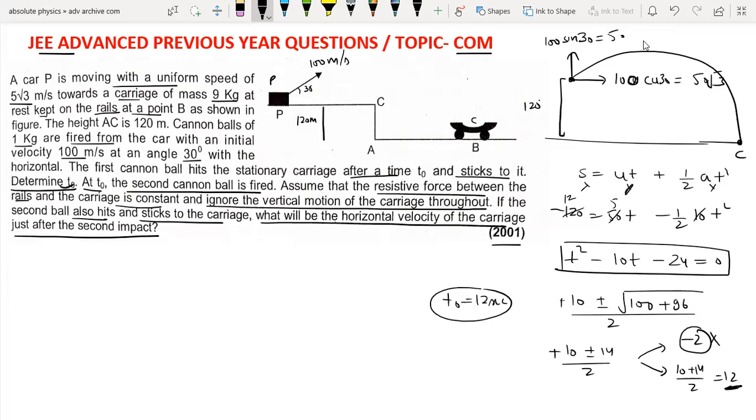First collision: this ball comes and hits the carriage. The horizontal speed will be the same, 50√3. We can apply momentum conservation here because there is no force in x direction, so initial momentum equals final momentum.